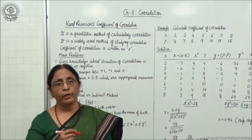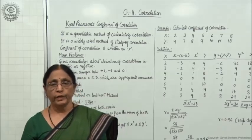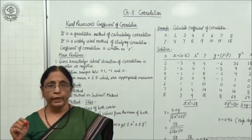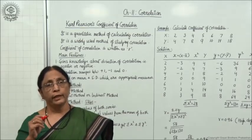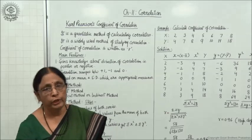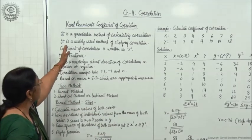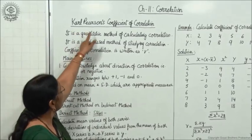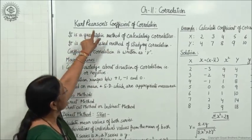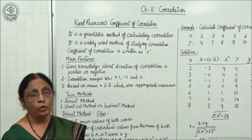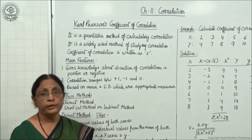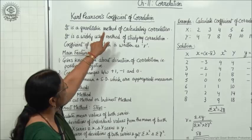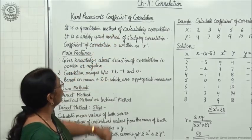This involves mathematical calculation, whereas in the case of scatter diagram, we were just drawing the diagram and plotting the points and getting an idea about the correlation. This is Karl Pearson's Coefficient of Correlation, and it is known as Karl Pearson's Coefficient because Karl Pearson was a statistician who started this concept of correlation.